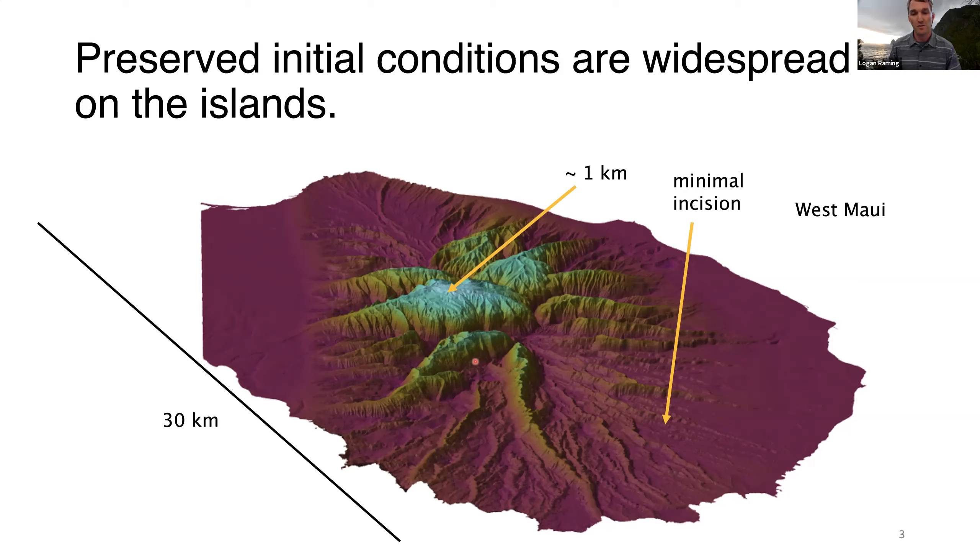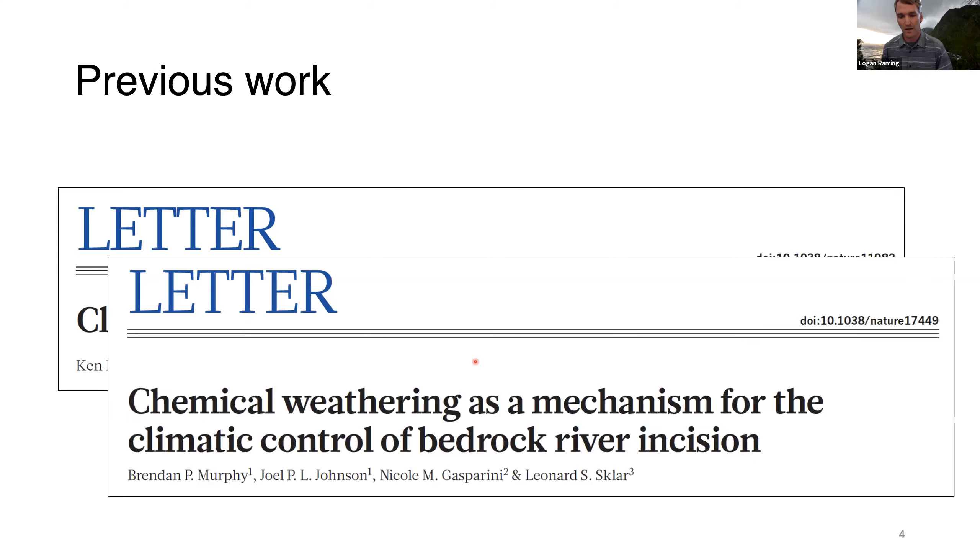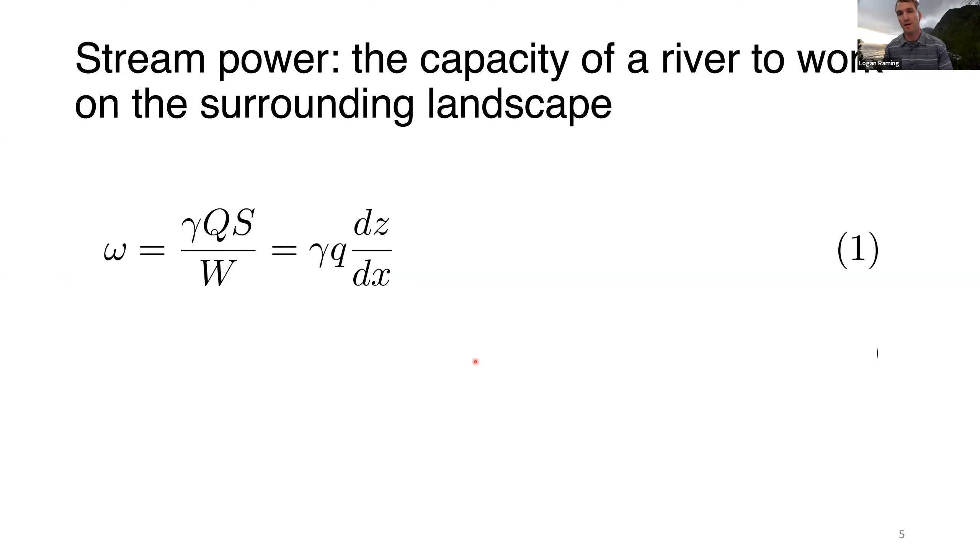There's been a lot of high impact work on this problem in Hawaii. A paper by Ferrier et al. focuses on how climate controls bedrock river incision on the island of Kauai, highlighting that mean annual precipitation is one of the major controls on river incision rate. Another paper by Murphy et al. focuses on chemical weathering as a mechanism for climate control on bedrock river incision, showing how weathering limits the strength of bedrock and influences incision rate.